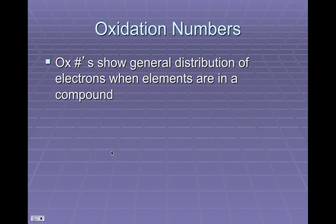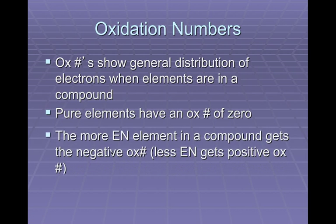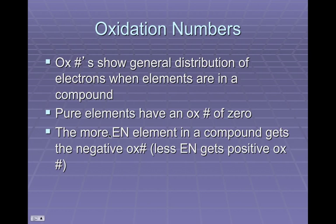An oxidation number's purpose is to show how the electrons are distributed around an element when it's in a compound. If an element is not in a compound, it's going to have an oxidation number of 0 because there isn't any unequal distribution of electrons. So pure elements have an oxidation number of 0. In a compound with two elements bonding, the more electronegative element is going to have the negative oxidation number, and by default the less electronegative one gets the positive oxidation number.